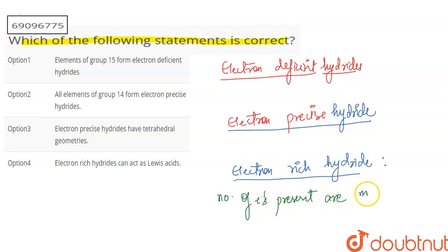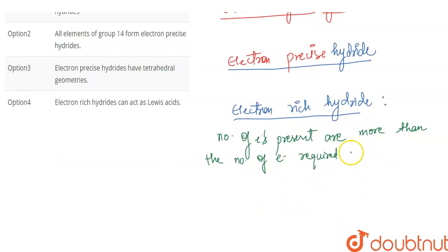More than the number of electrons required to make the octet.